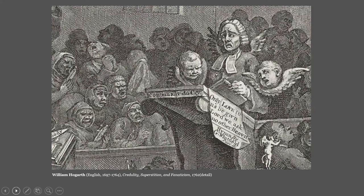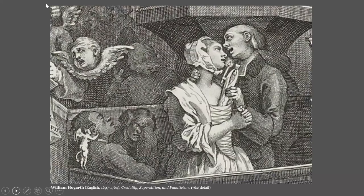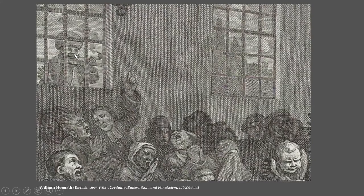One of his most famous prints is a parallel to this one, poking at Anglicanism and how boring their sermons are — it's called The Sleeping Congregation. So in this print, there is one sensible person and he is not an Anglican. It's this guy, the Turk — the Muslim — who is looking in from the outside, from the safety of outside, into the madhouse of this church.